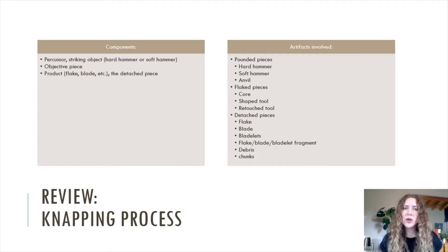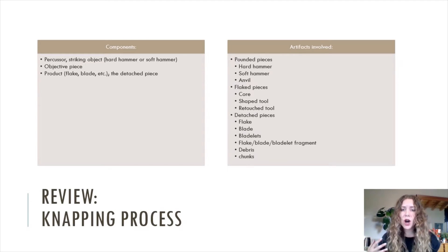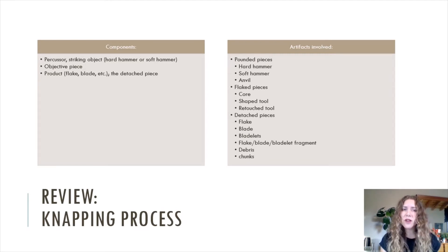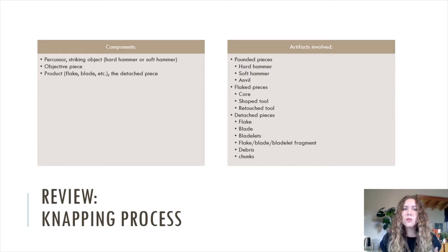I also thought it would be wise to review and expand on the flintknapping process as a whole. There are three components: the percussor, like the hammerstone, which is the striking object; the objective piece, which would be the raw material, often the core; and the detached piece, which is the product or the flake. In an archaeological context, these are reflected as three distinct types of artifacts: pounded pieces, which would be your hammerstone, hard hammer, soft hammer, or anvil.